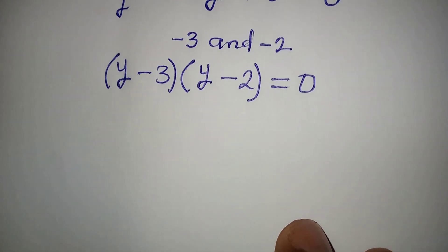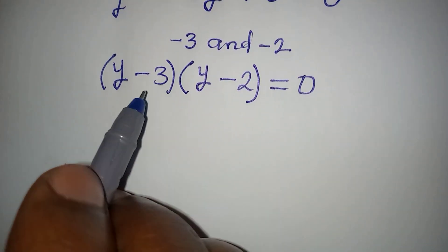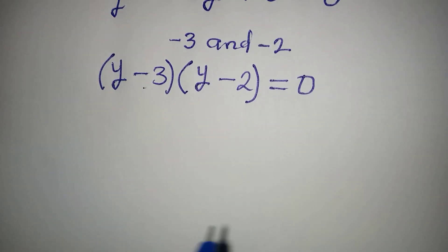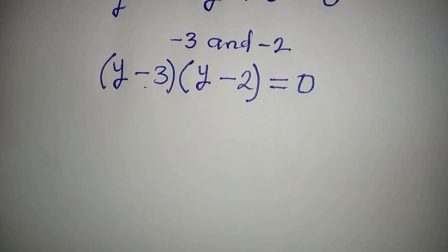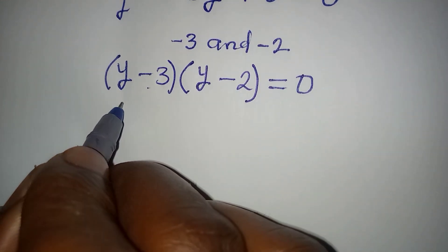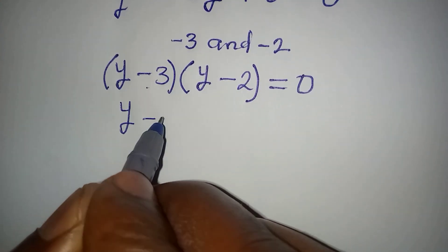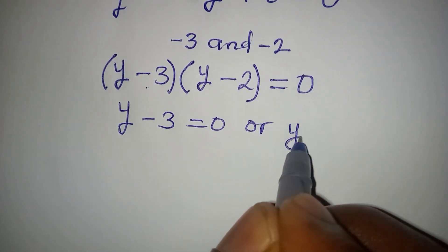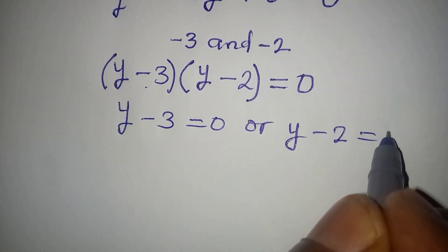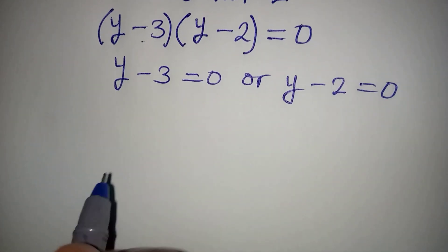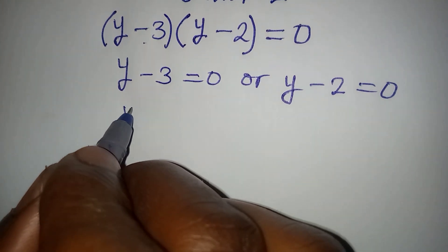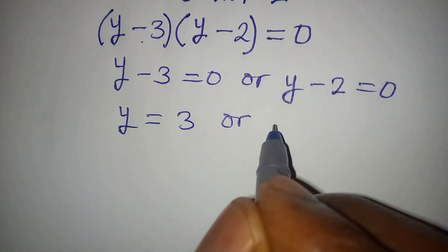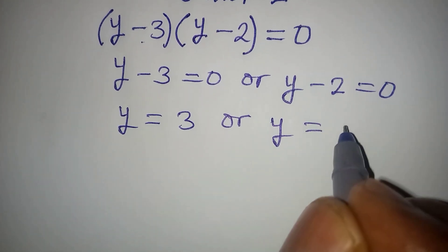Now let's apply the zero product rule. If two numbers multiply to give 0, it means either of them should be equal to 0. So we have y minus 3 equal to 0, or y minus 2 equal to 0. From the first, y equals 3; from the second, y equals 2.